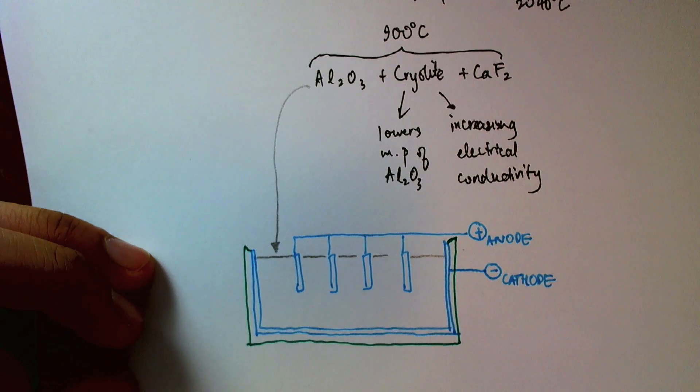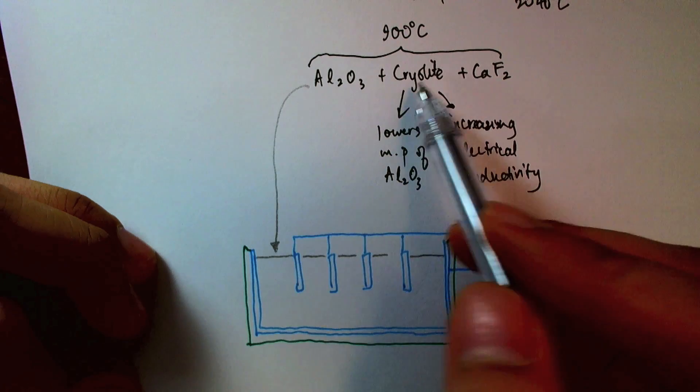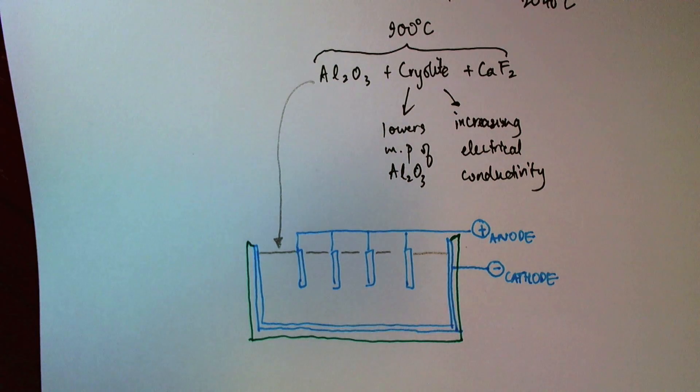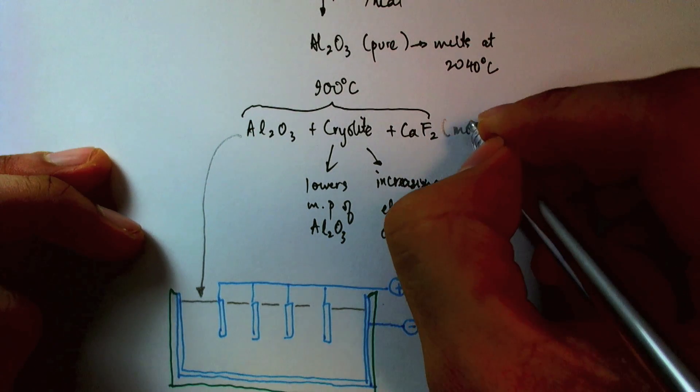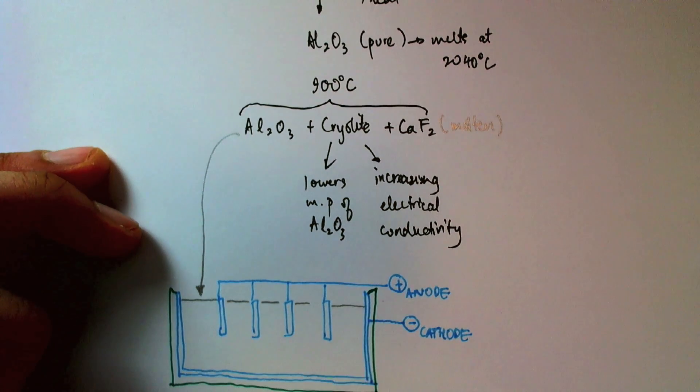So I will have the mixture of aluminum oxide, cryolite, and calcium fluoride in here, in its molten state. I'll just emphasize that to say this is all melted down.